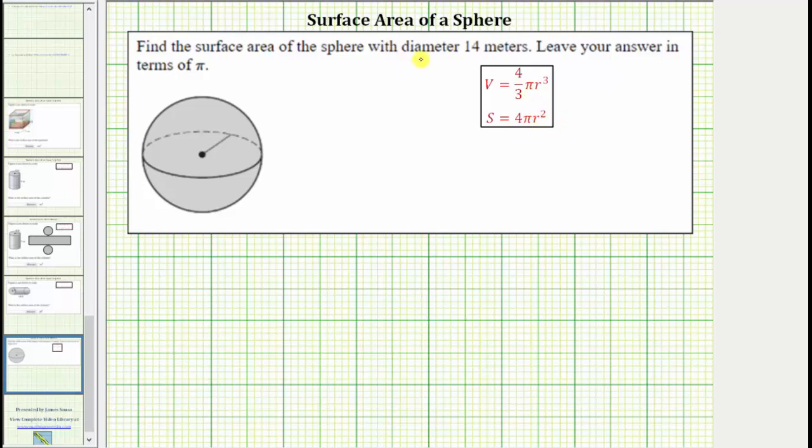Notice how for this question we are given the diameter is 14 meters. The diameter is this length here, which is the distance from any point on the surface to the opposite side of the sphere passing through the center.